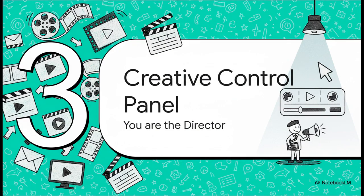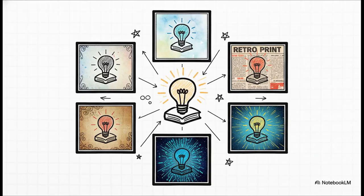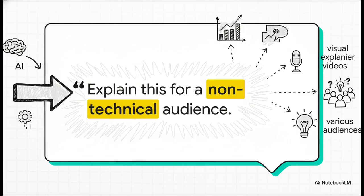This update isn't just about letting an AI do everything for you — it's about putting you in the director's chair. You have a ton of creative control over what the final video looks and sounds like. First, you get to pick your video format: a quick brief for a high-level summary perfect for a study session, or the full explainer, a structured deep dive into the whole topic. Then there's the visual style — you can make your video look like a classic whiteboard animation, a soft watercolor painting, a retro infographic, or even anime style. You can take the exact same document and create totally different videos for totally different audiences.